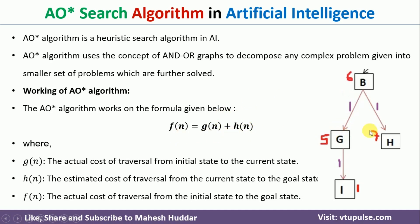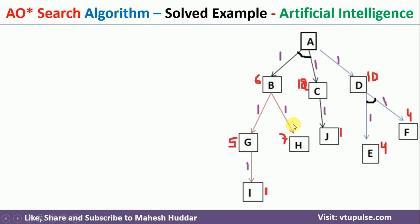To understand this equation, I will consider this particular graph. The number written on top of a node — for example, 5 — indicates the heuristic value of that node, which is the probable distance to reach from that node to the goal node. The value 1 shown beside the edge is the actual cost to reach from the initial node to node G, which is the g(n) value. Using this equation, we calculate f(n), and based on f(n) we decide which path to select at a given point.